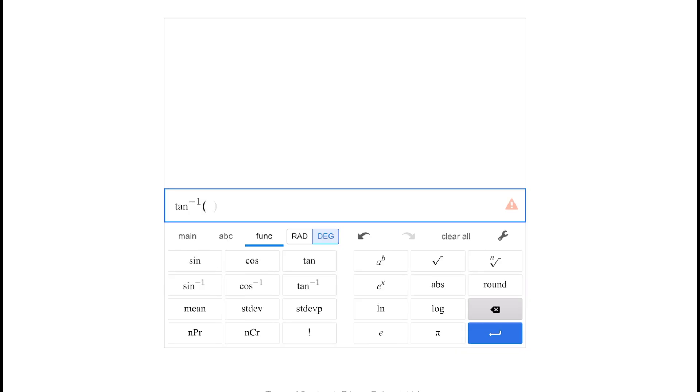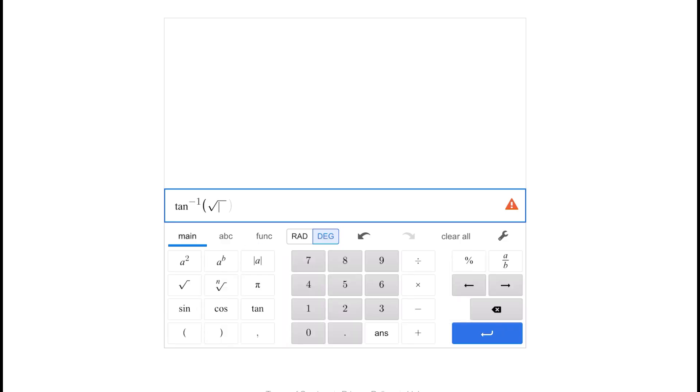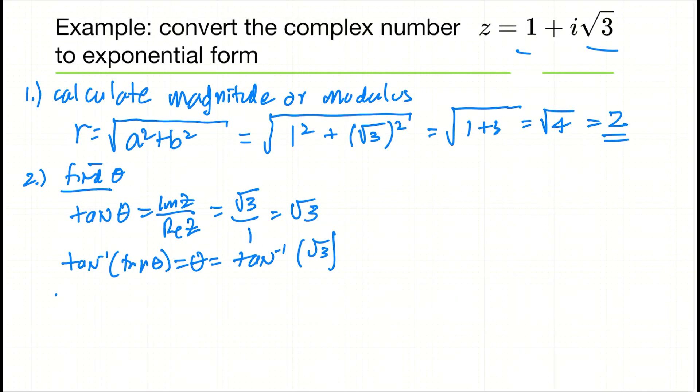Now we need to get the function key because we want to do the inverse tangent. I'll do the inverse tangent, then go back and do the square root—hit the square root button—then go back to the main to get numbers. We want to do √3, close the parenthesis, and that's 60 degrees. The inverse tangent of √3 is 60 degrees, so theta equals 60 degrees.